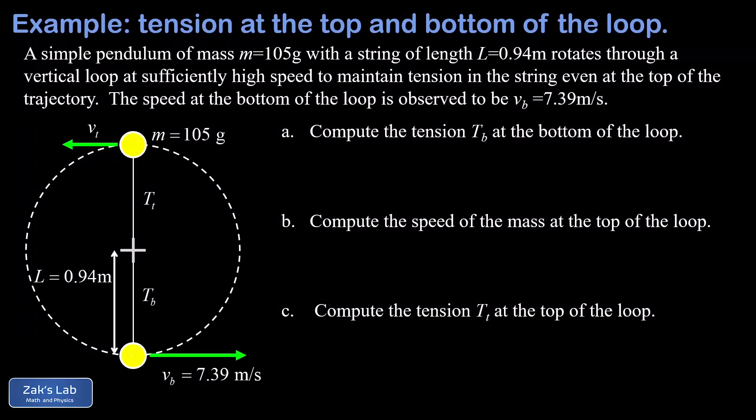In this problem we're analyzing a simple pendulum that goes all the way through a vertical loop. We're given the length of the string, the mass of the pendulum bob, and the speed at the bottom of the trajectory. We're going to answer several questions about this.